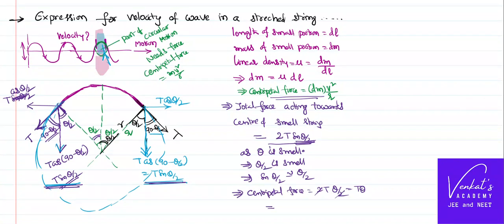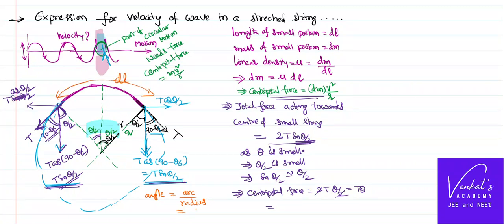Now, what is the value of theta? The angle is always defined as arc by radius. The arc value here is the length of the small string portion, which is DL, and the radius is R. So theta equals DL by R. Substituting into the centripetal force expression: T·(DL/R). This equals DM·v²/R. The R on both sides cancels.